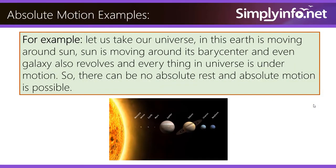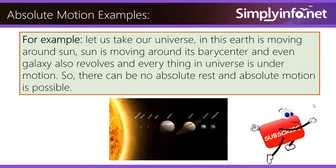For example, let us take our universe. The earth is moving around the sun. The sun is moving around its barycenter, and even the galaxy also revolves. Everything in this universe is under motion. So, there can be no absolute rest, and absolute motion is possible.